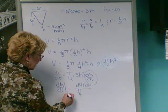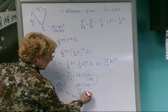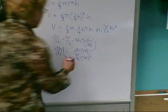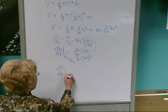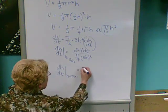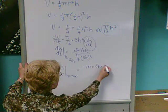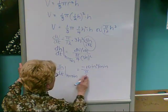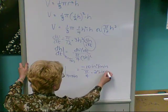And specifically when h is 5 inches, we'll be inserting 5 inches and squaring. dh dt, or height at 5 inches in a cone, is going to be negative 10 inches cubed per minute divided by pi over 4 times 25 inches squared.